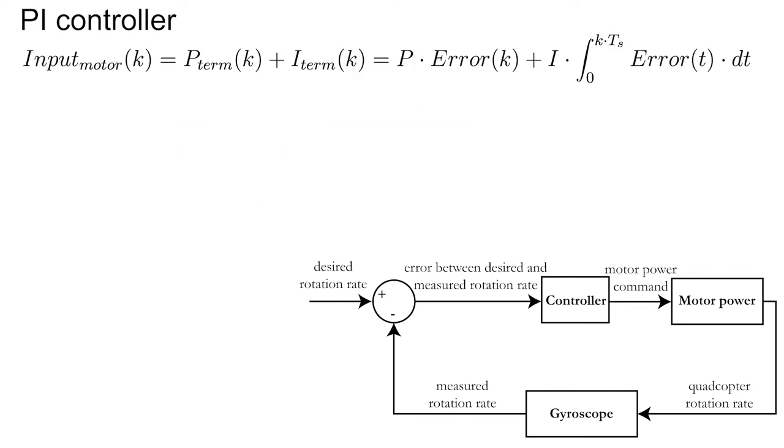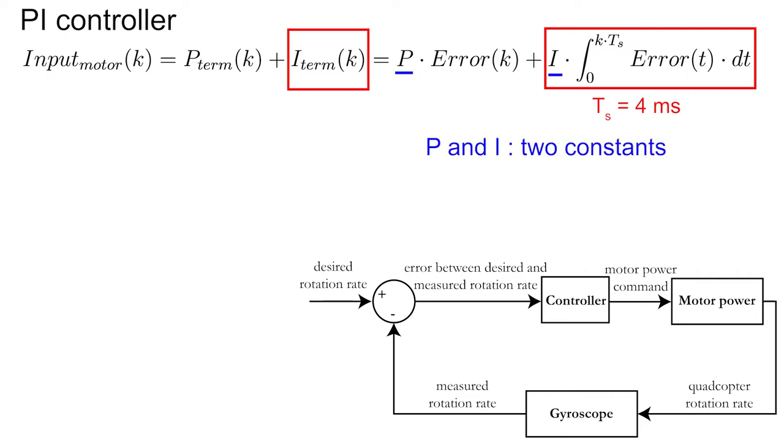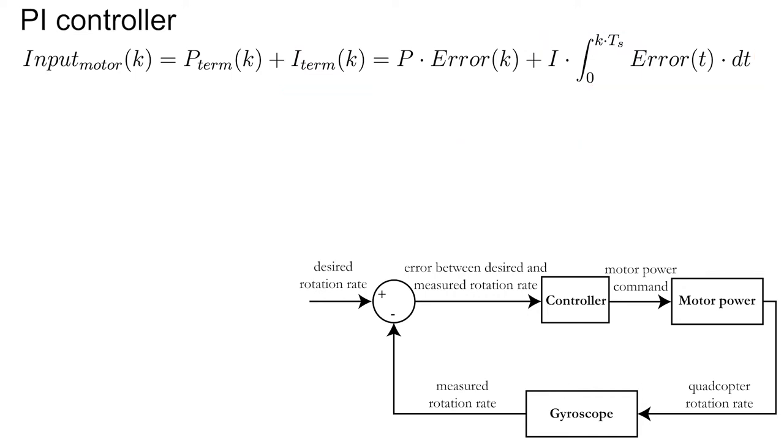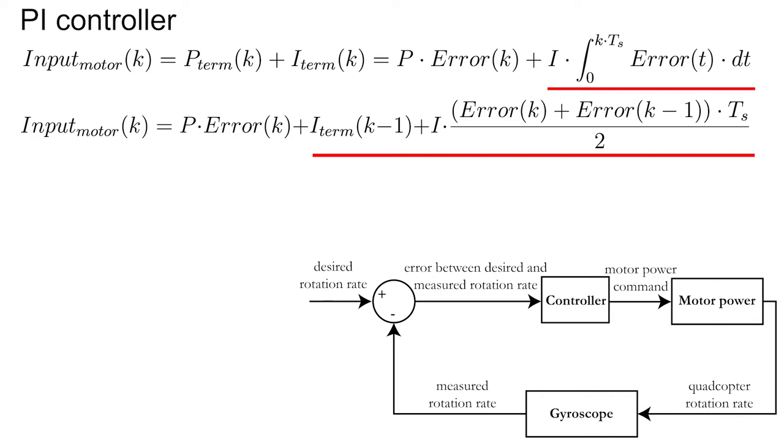We can solve this issue by adding an integral term. This term will sum up the past errors, hence eliminating the steady state error. The addition of the integral term can be implemented in the control equation by integrating the error over time. Since each iteration lasts 4 milliseconds, the integral goes from 0 seconds to k multiplied by 4 seconds. You multiply the integral once again with a constant I. The integral can be discretized by taking the average of the previous and the current error, multiplying it by the length of one iteration, and adding this to all past errors.